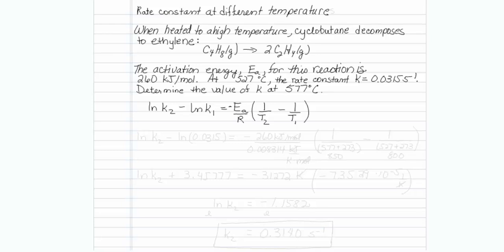This is how to get the rate constant at different temperatures. When heated to a high temperature, cyclobutane decomposes to ethylene. The activation energy, Ea, for this reaction is 260 kilojoules per mole. At 527 degrees Celsius, the rate constant is k equal to 0.0315 per second. Determine the value of k at 577 Celsius.